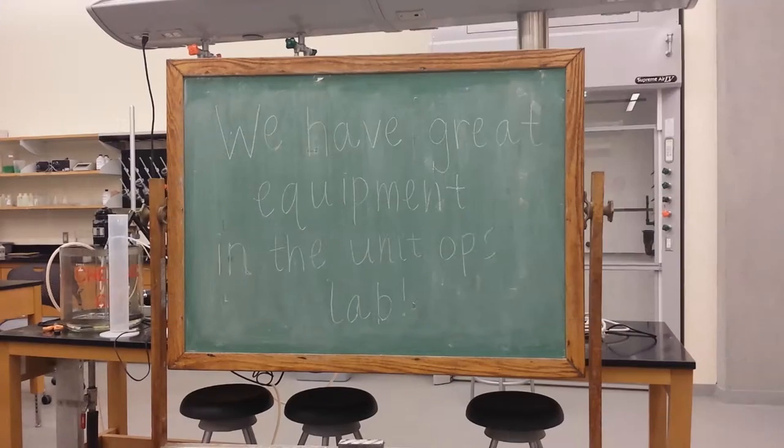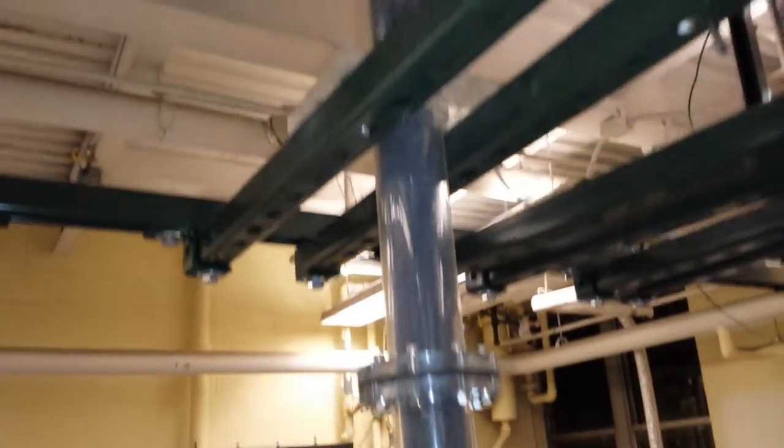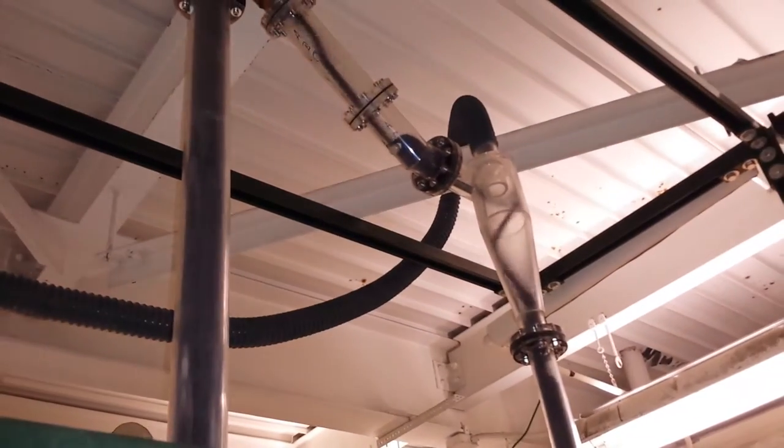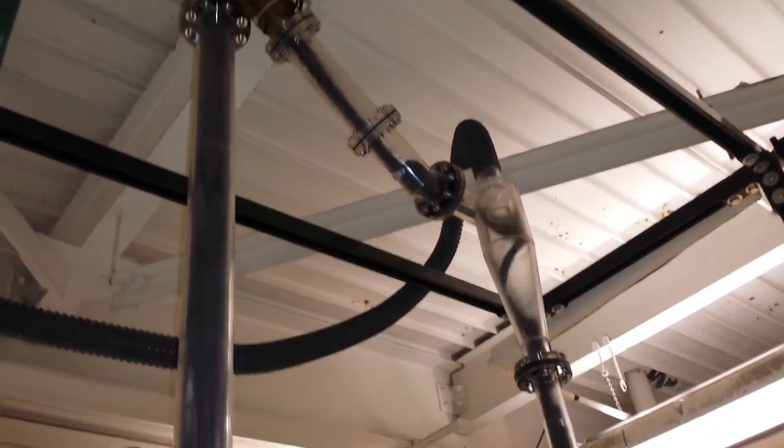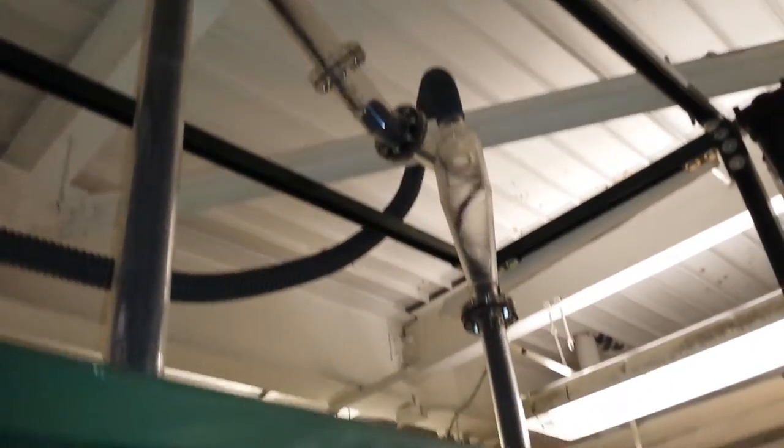We have great equipment here in our unit ops lab. One such piece of equipment that you're seeing now, in fact, is called the circulating fluidized bed reactor. What this represents is the continuous circulation of a fluid-like catalyst between a reaction side and a regeneration side, allowing for continuous operation of this given unit.